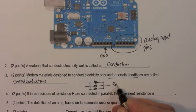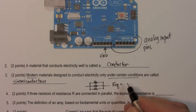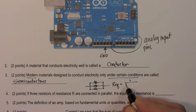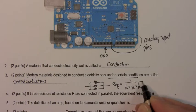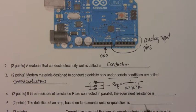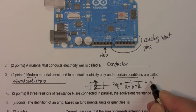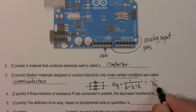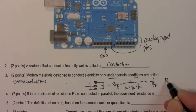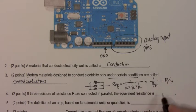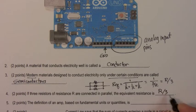So the equivalent resistance of this circuit is one over one over R for the first one plus one over R for the second one plus one over R for the third one. We just put in R as a variable. We add up the terms in the denominator to get one over three divided by R. The inverse of three divided by R is R divided by three. So the answer is R divided by three.